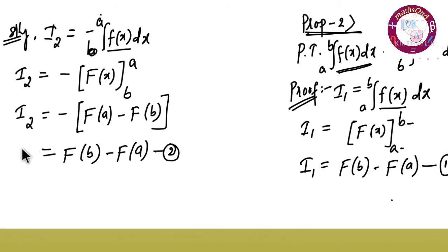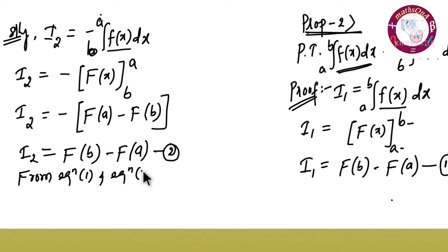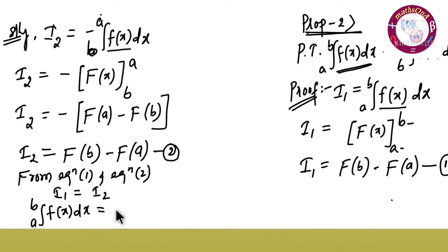Comparing i1 and i2 from equation one and equation two, we get i1 is equal to i2. That is, integration of a to b f of x dx is equal to minus of integration of b to a f of x dx. This is the answer.